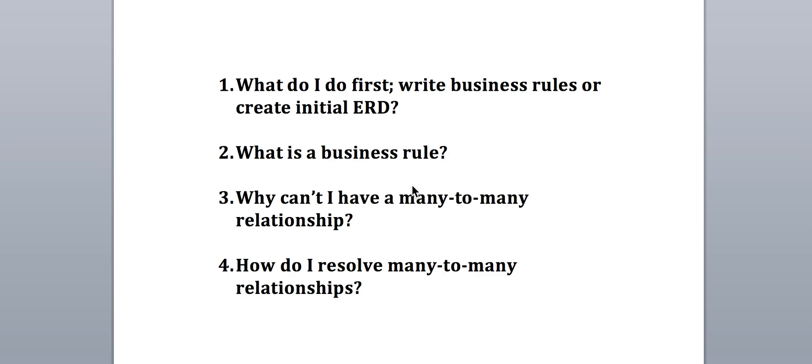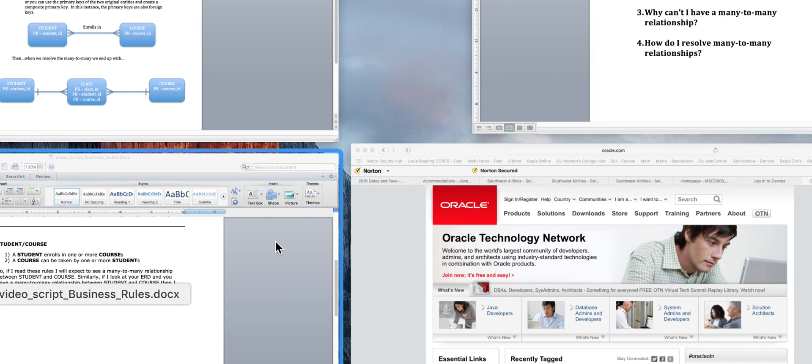So first I want to define what a business rule is, because this can be confusing. I think the name 'business rule' is a bit of a misnomer — it really should be called a 'relationship rule.' When we say business rule in database design, it's easy to think about policies and procedures, but what we're really talking about is a rule that defines the relationship between two pieces of data.